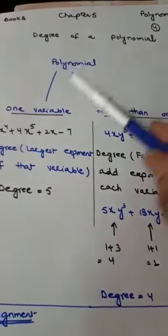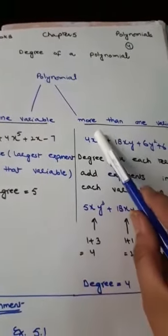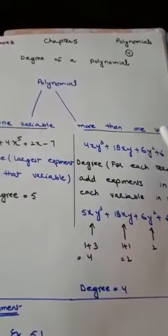Polynomial is divided into two main categories: a polynomial with one variable and a polynomial with more than one variable.